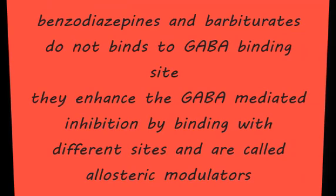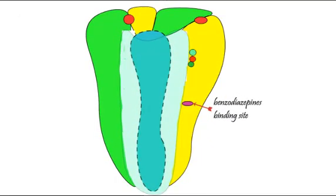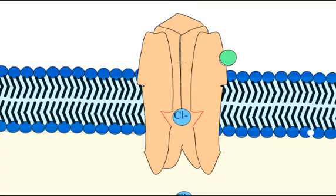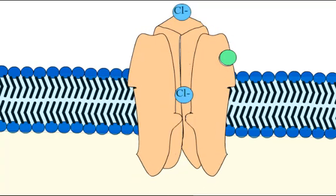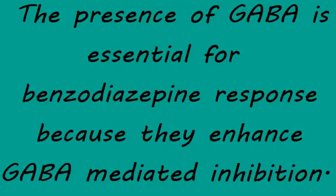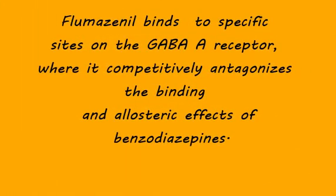Drugs such as benzodiazepines and barbiturates do not bind to the GABA binding site on the GABA-A receptor. Instead, they enhance GABA-mediated inhibition by binding to different sites and are called allosteric modulators. The binding sites of benzodiazepines are situated at the interface between the alpha and gamma subunits of the GABA-A receptor, enhancing conductance of chloride ions by increasing the frequency of channel opening. The presence of GABA is essential for the benzodiazepine response. Flumazenil, the antidote for benzodiazepine overdose, also binds to specific sites on the GABA-A receptor, where it competitively antagonizes the binding and allosteric effects of benzodiazepines.